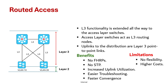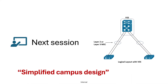To summarize this session: routed access moves the Layer 2/Layer 3 boundary to the access layer, making access switches full Layer 3 nodes. It eliminates the need for STP and FHRPs, increases uplink utilization, and simplifies troubleshooting. Using routing protocols like OSPF and EIGRP ensures faster convergence. However, it does not support spanning VLANs across multiple switches, and it may require higher-cost Layer 3 switches. The choice depends on your network requirements and constraints. In my next session, I will discuss simplified campus design based on switch clustering technologies.